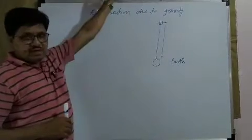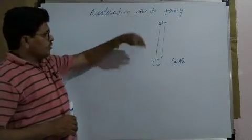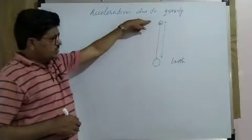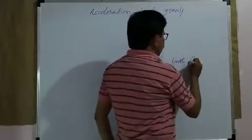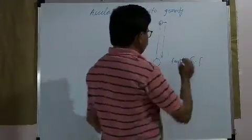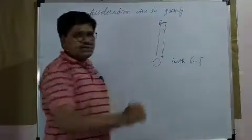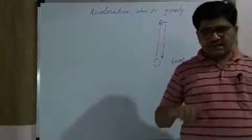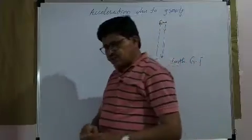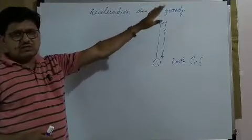Due to this, the velocity of that object goes on decreasing. When it reaches a maximum distance, the velocity becomes zero and only earth's gravitational force acts on it, causing it to fall down toward the surface of the earth. During this period there is a rate of change of velocity — this rate of change of velocity is nothing but acceleration, and this acceleration is produced only due to the earth's gravitational force. Due to this, that acceleration is known as the acceleration due to gravity.